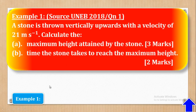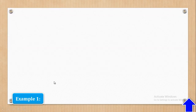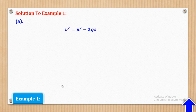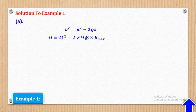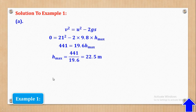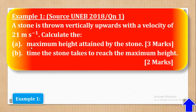With that information, we can now answer the question. They want us to get the maximum height attained by the stone. We shall use the third equation of motion, where V squared equals U squared minus 2GS. When I substitute V is 0, U is 21, G is 9.8, and S is H max, I come up with H max being equal to 22.5 meters. That's the value for the maximum height which was required.